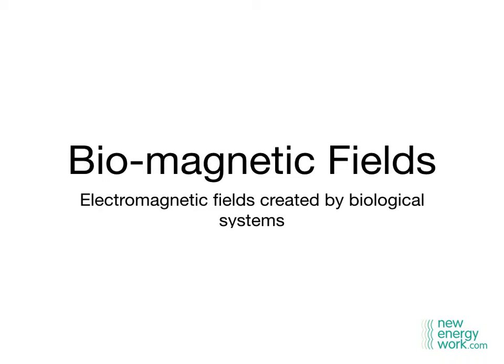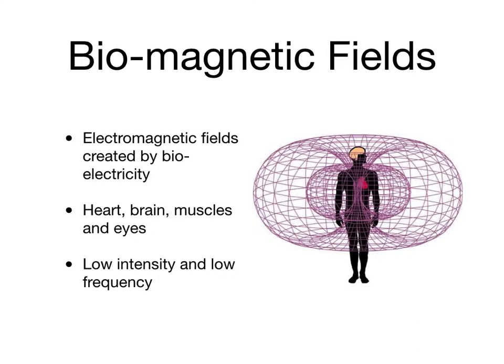Let's look more closely at biomagnetic fields. Biomagnetic fields are electromagnetic fields created by biological systems. They are created by the human body — the heart, brain, muscles, and eyes all create different parts of the biomagnetic field. Current measurements allow us to detect the biomagnetic field of the human body five metres away. However, the fields are very low intensity, very weak, and very low frequency.